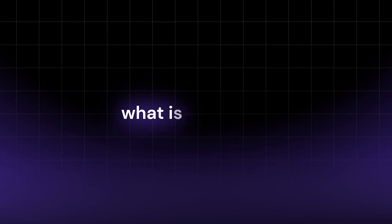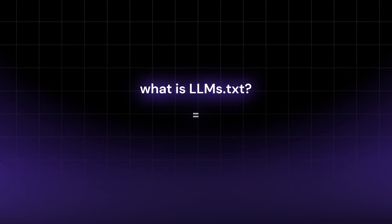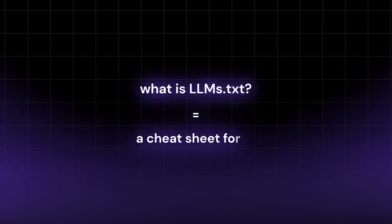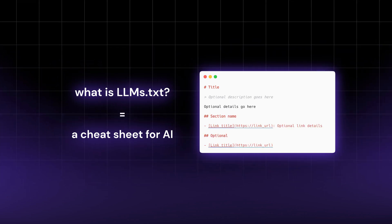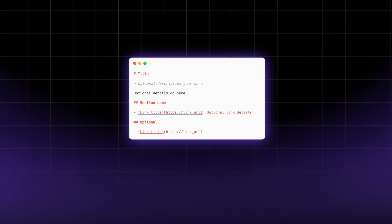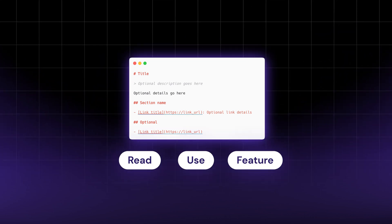So what exactly is an LLMs.txt file? Think of it as a cheat sheet for AI. It's a proposed standard file you place in your website's root directory to help large language models understand your content. It structures your site's information so AI can read, use, and feature your content in its answers. Basically, it tells the AI agent or crawler what to prioritize rather than gobbling everything up.